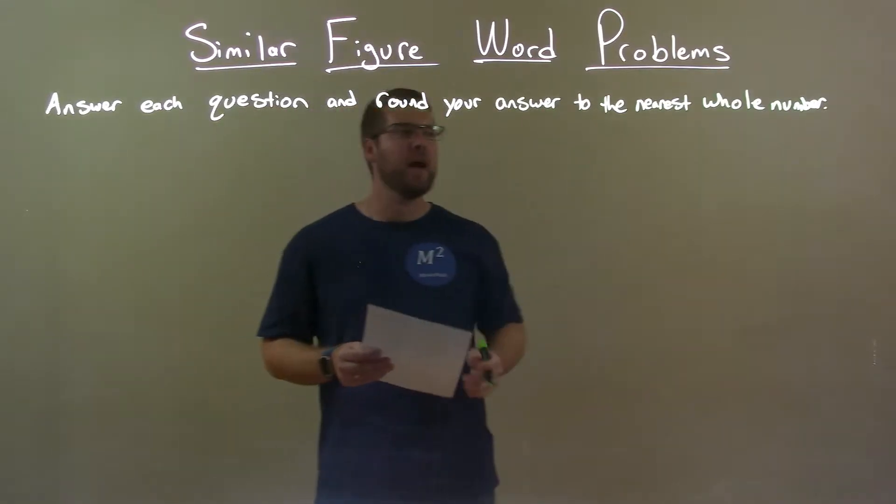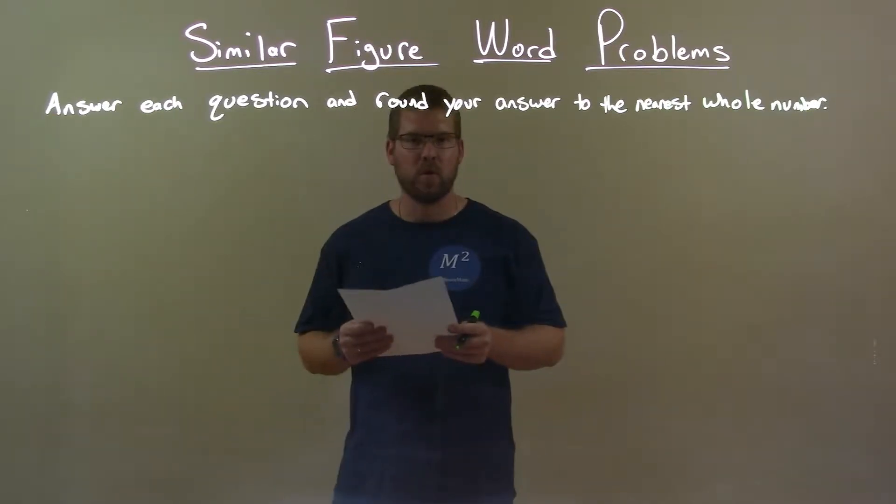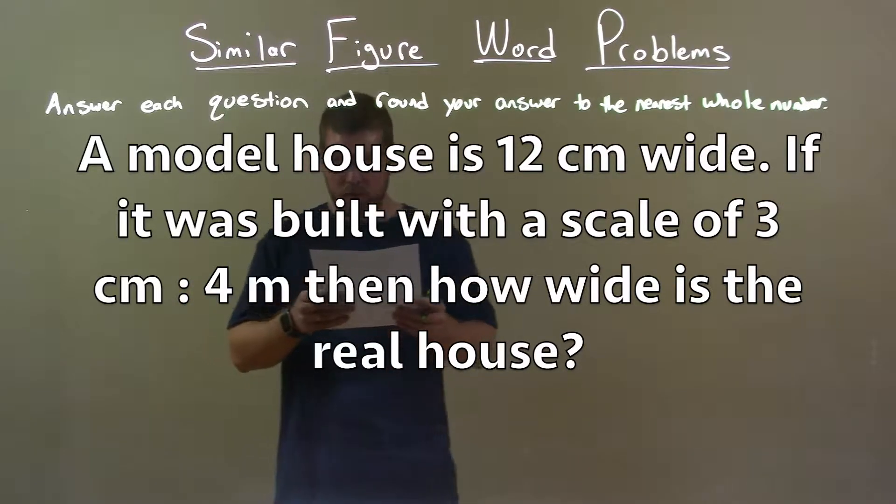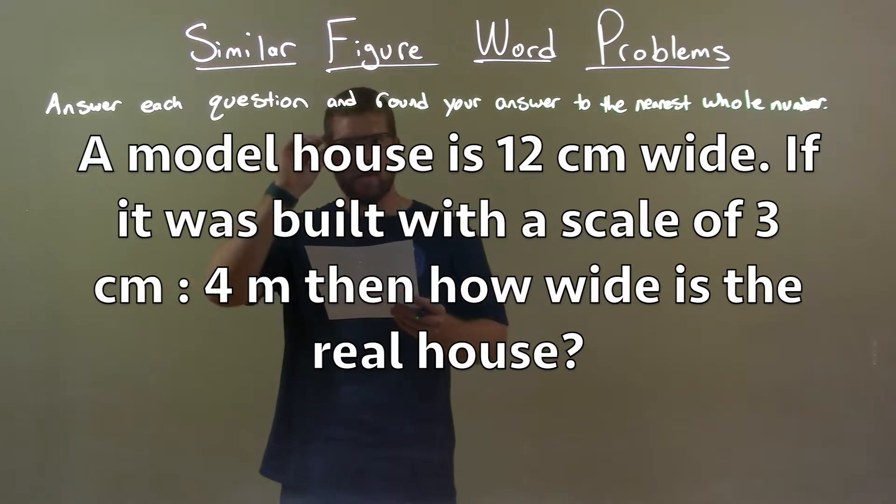Answer each question and round your answer to the nearest whole number. I was given this word problem: A model house is 12 centimeters wide. If it was built with a scale of 3 centimeters to 4 meters, then how wide is the real house?